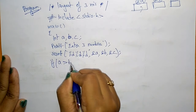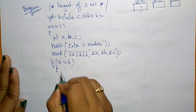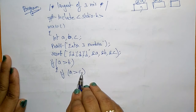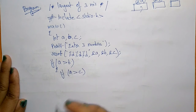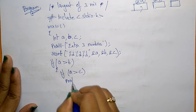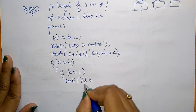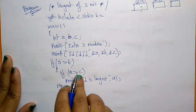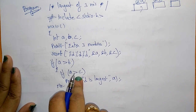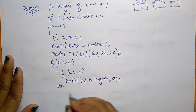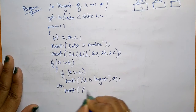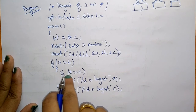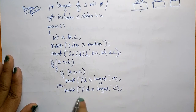Now writing the conditions: if a is greater than b, again check if a is greater than c. If a is greater than both b and c, then a is obviously the largest, so printf '%d is largest' printing the value of a. Else — if a is greater than b but not greater than c — then c must be greater, so printf '%d is largest' printing the value of c.